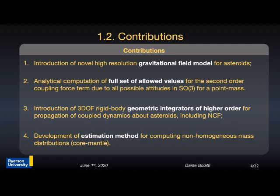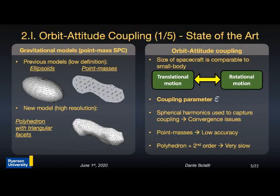With these comments, let's go to the first topic: modeling the orbit-attitude coupling phenomena. First, a quick discussion on the background will take place, and this format will be repeated for the two other parts. For close proximity operations, several models that represent the gravity field exist in the literature. Among these, the three most used are the ellipsoid, point masses for mass concentrations, and polyhedron models.